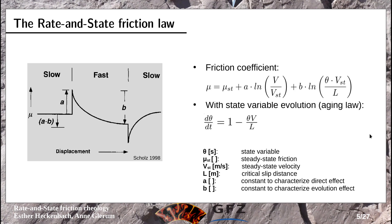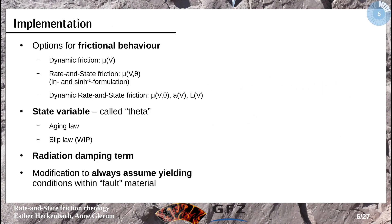Now I want to show how I put that into ASPECT. I wrote a new rheology model called friction options. Here I listed the options apart from just using the internal angle of friction as most people do. I put in dynamic friction, which was already in ASPECT and is based on the 2013 paper from Ilona van Dinther, where friction depends on velocity.